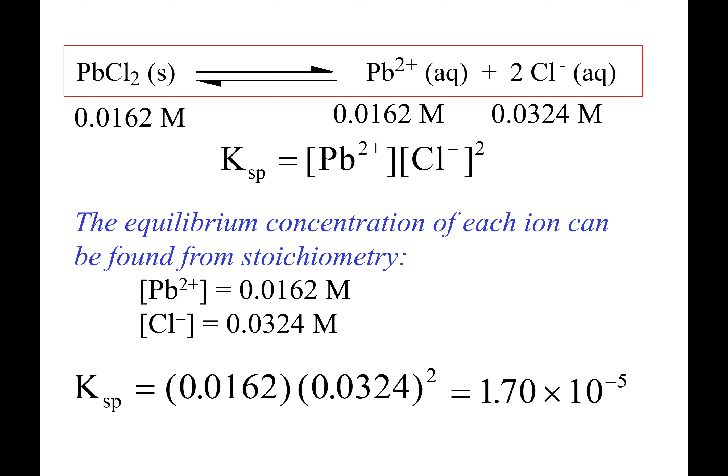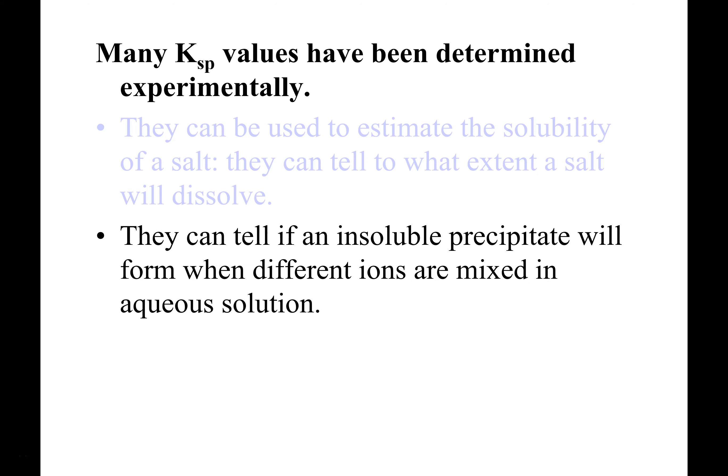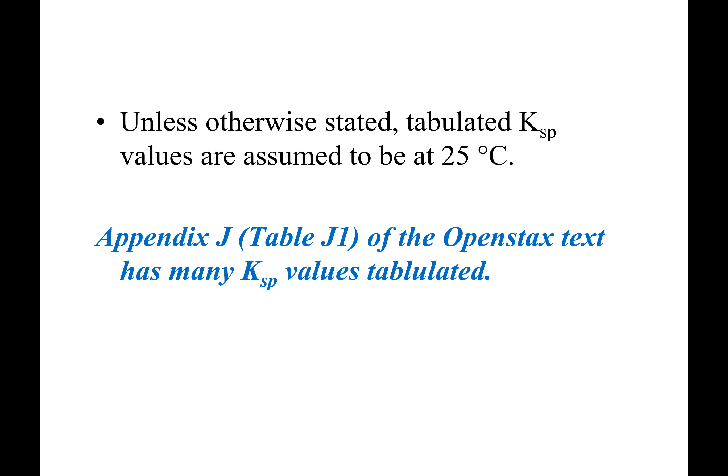Solubility products can be used to estimate how much of a salt will dissolve and to what extent. We'll also do problems where you use Ksp to determine whether a precipitate will form. If there are multiple options for precipitation, you can use solubility products to determine which precipitates first. Most Ksp tables are measured at around 25°C.